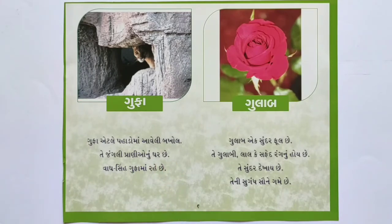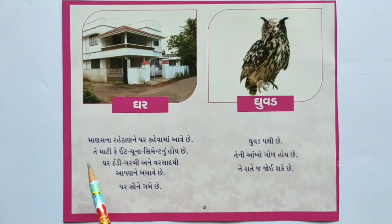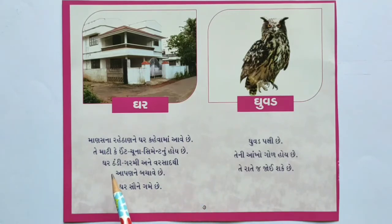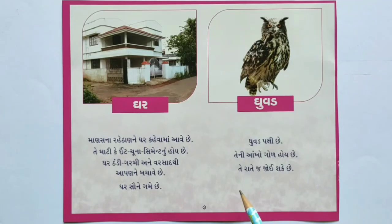ઘર - માણસના રહેઠાણને ઘર કહેવામાં આવે છે. તે માટી, ઈંટ, ચૂના, સિમેન્ટનું હોય. ઘર ઠંડી, ગરમી અને વર્ષાથી આપણને બચાવે છે. ઘર સૌને ગમે છે. ઘૂવડ - પક્ષી છે. તેની આંખો ગોળ હોય છે. તે રાત્રે જ જોઈ શકે છે. ખૂબ સરસ! હવે તમારી જાતે વાંચો.